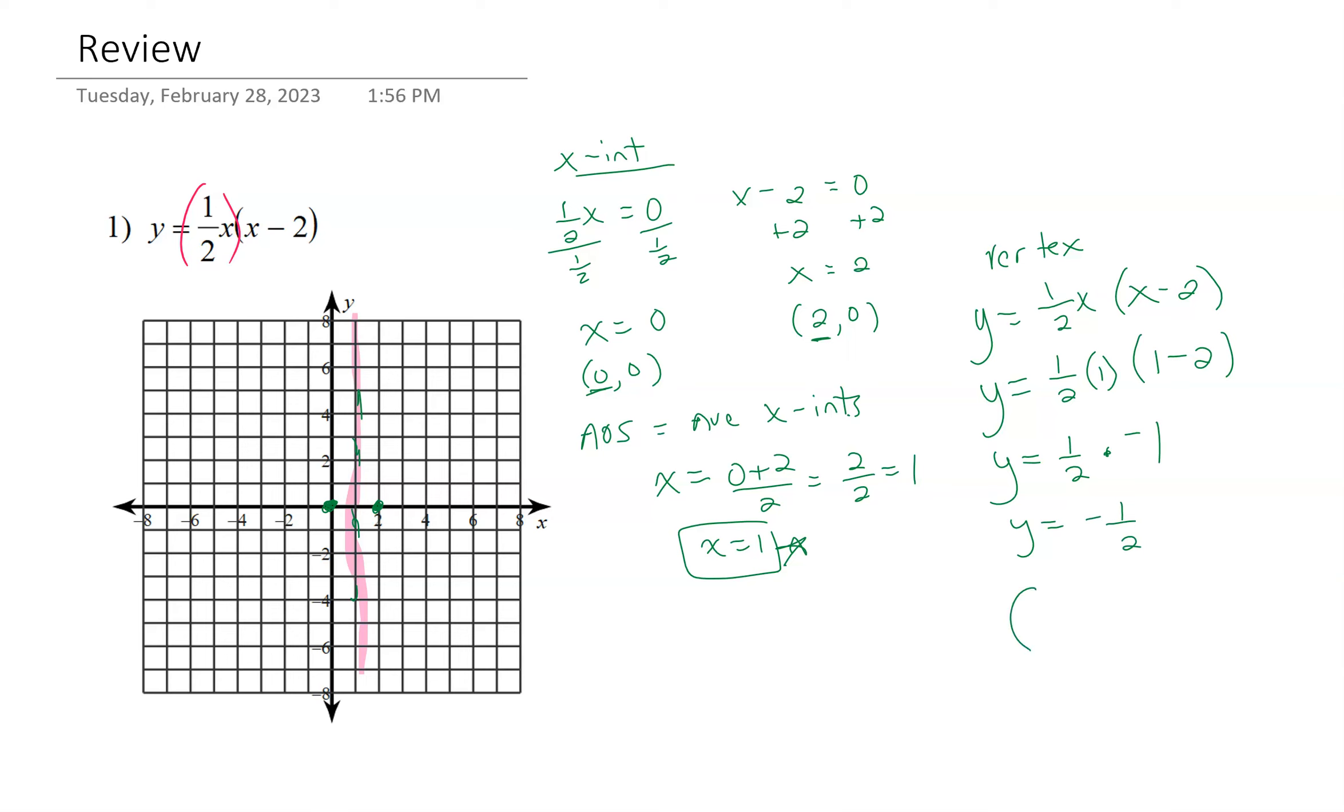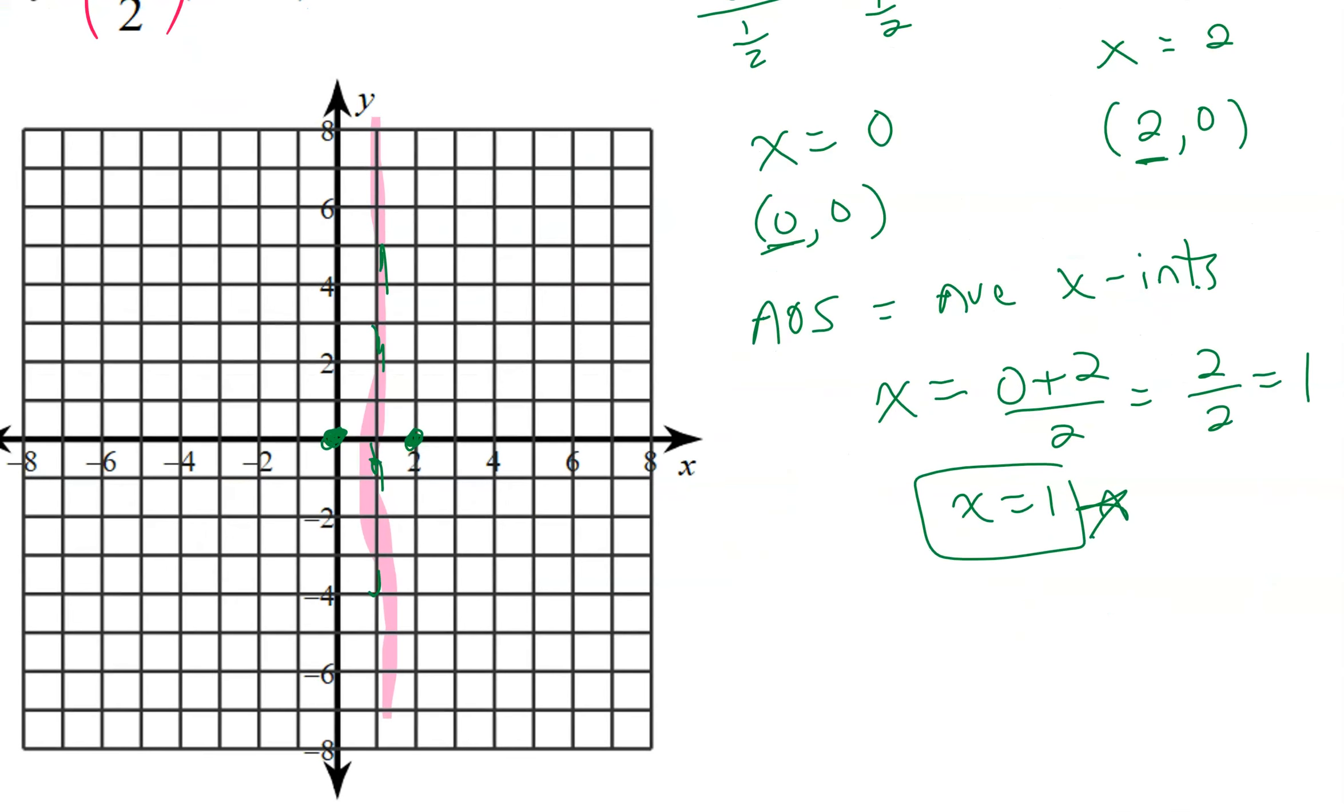So our vertex has an x value of 1 and a y value of negative 1 half. We can put that right there on the vertex. And since we have three points, we can go ahead and draw a sketch of our parabola right there. Make sure that it looks like a u and not like a v.